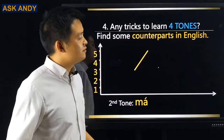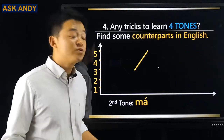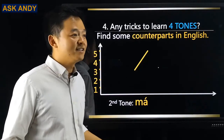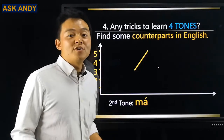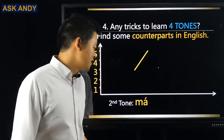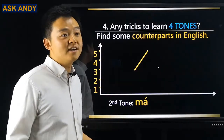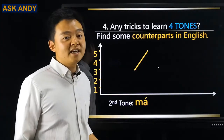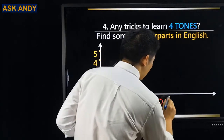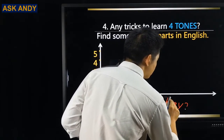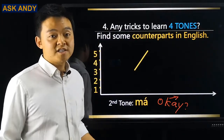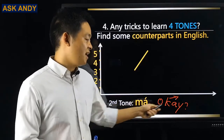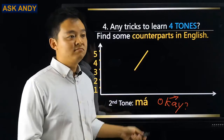Question number four: any tricks to learn four tones? My trick is to find counterparts in English. For second tone, the counterpart I found is the word 'okay' — when you're making a suggestion, like 'let's hang out tonight, okay?' That okay is a rising tone. Keep the K and make it rise: 'kay' — so MA with second tone is MÁ. For third tone, the counterpart is when you're hesitating: 'well, let me think about it.' That 'well' goes down and up again. So MA with third tone is MǍ.